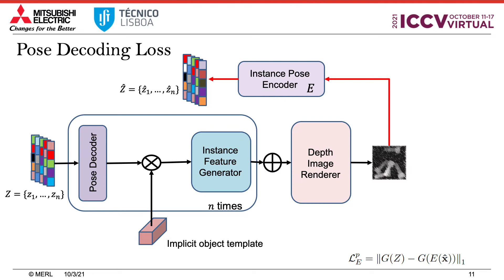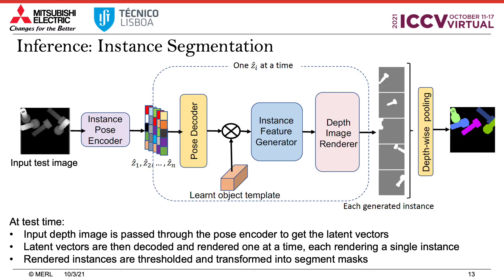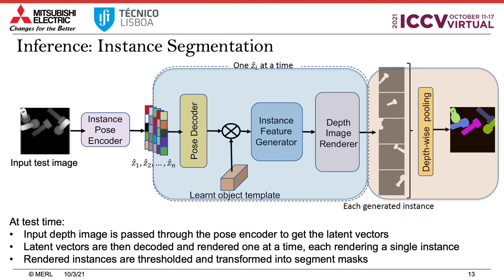We also add a loss on the reconstructed pose vectors Z-hat. However, comparing pose vectors directly is tricky due to symmetries of the object. Instead, we forward-propagate the decoded pose vectors through the generative module, thereby producing a new depth image. This new depth image is compared to the depth image generated in the previous step via an L1 loss. At test time, when given a depth image consisting of multiple instances of the object, the instance pose encoder produces Z-hats capturing the pose of every instance, then renders the instances one at a time using the depth renderer. The single instances produced are then pooled along the depth axis and converted to instance masks.